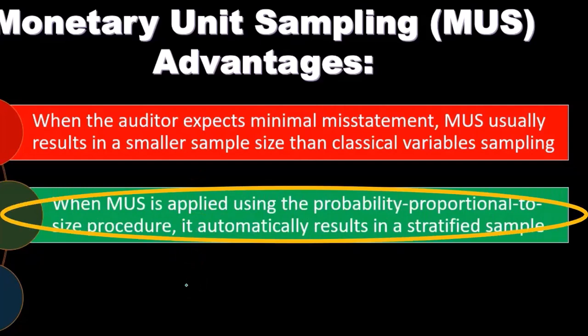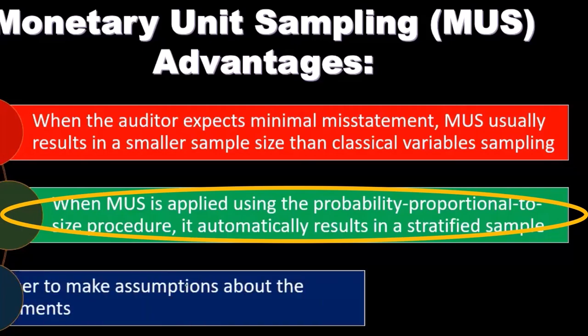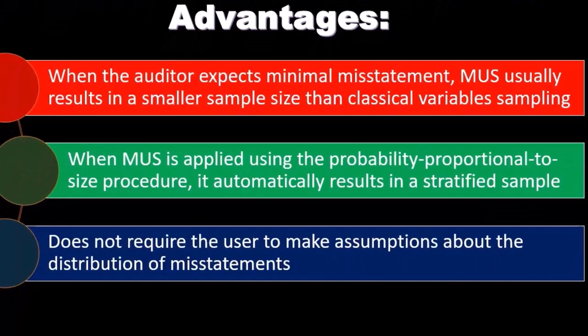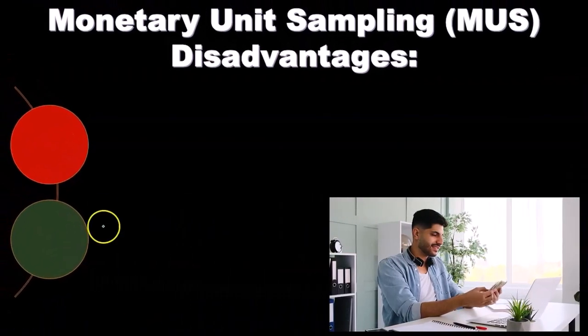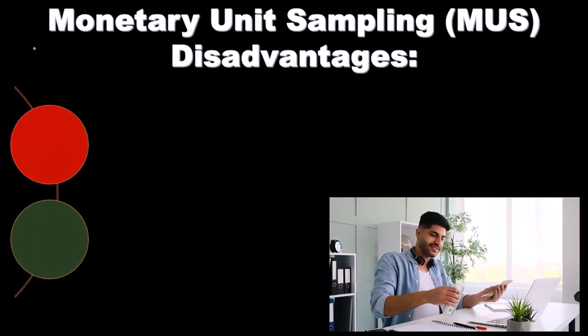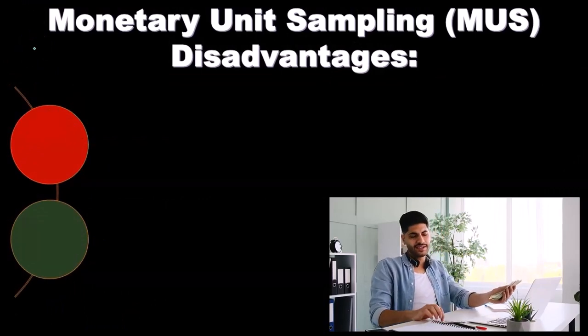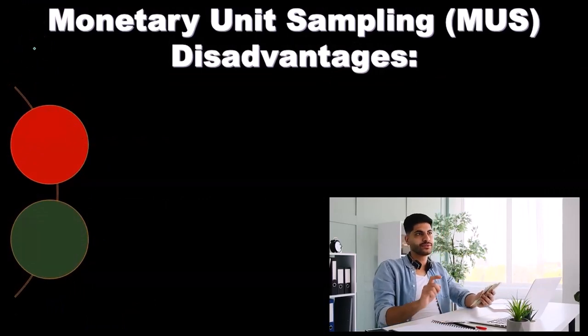When monetary unit sampling is applied using the probability proportional to size (PPS) procedure, it automatically results in a stratified sample. Additionally, MUS does not require the user to make assumptions about the distribution of misstatements, which eliminates a potential source of error.